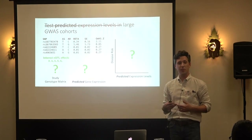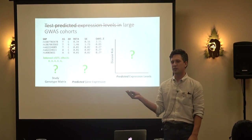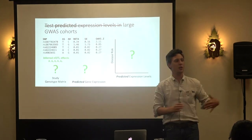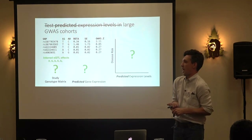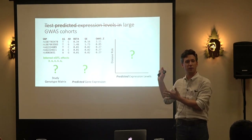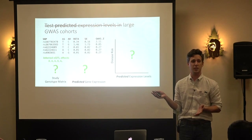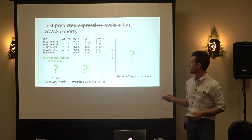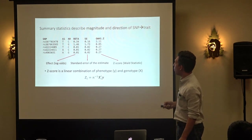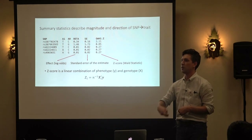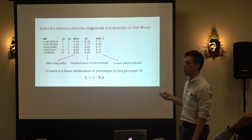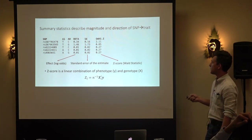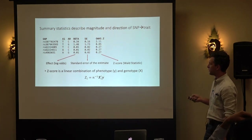How does that mesh with GWAS? We typically don't have access to individual-level data. GWAS now are large consortium meta-analyses, so there's a logistic issue — we don't have a single genotype matrix to run on, and for privacy reasons individual-level data often isn't released. What we do have are summary statistics — each row corresponds to a SNP tested for association, and what comes out are the betas and standard errors, which you can combine to get a z-score or the Wald statistic.